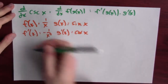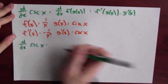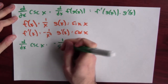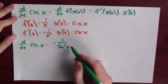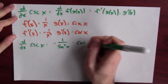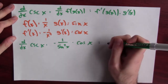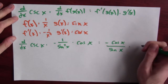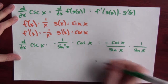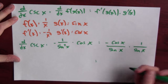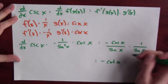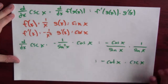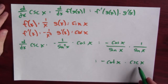Consequently, the derivative of csc(x) is -1 over sine squared — that's f' evaluated at g(x) = sin(x) — times the derivative of g, which is cos(x). Combining these gives -cos(x)/sin(x) times 1/sin(x), which is -cot(x) times csc(x). So the derivative of csc(x) is -cot(x)·csc(x).